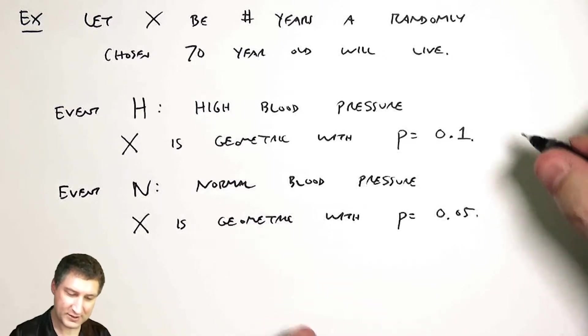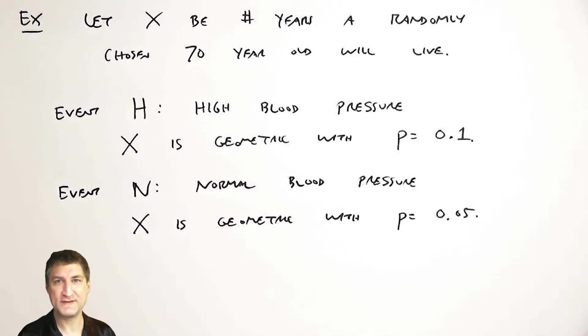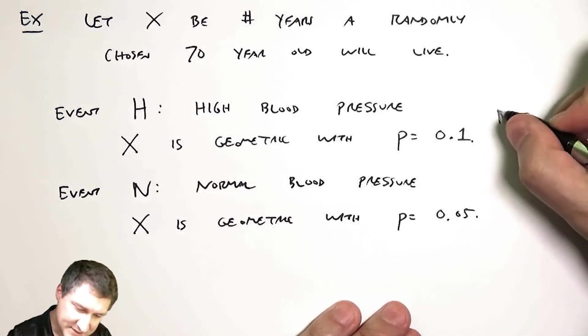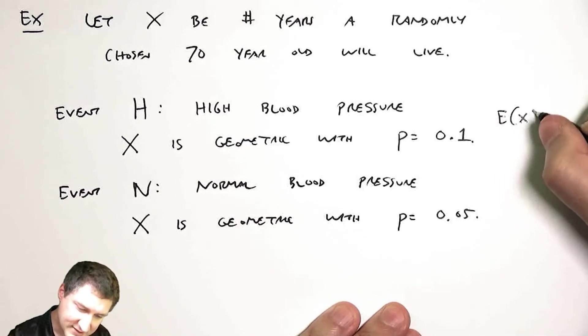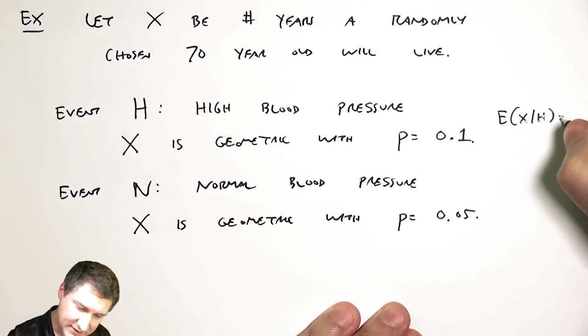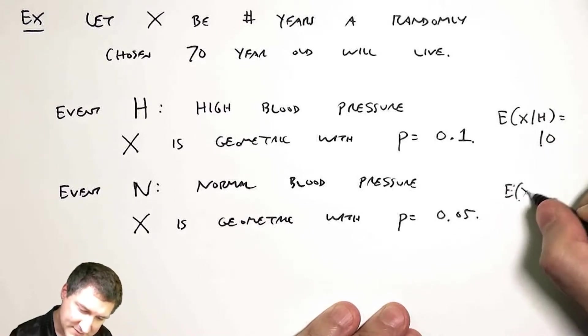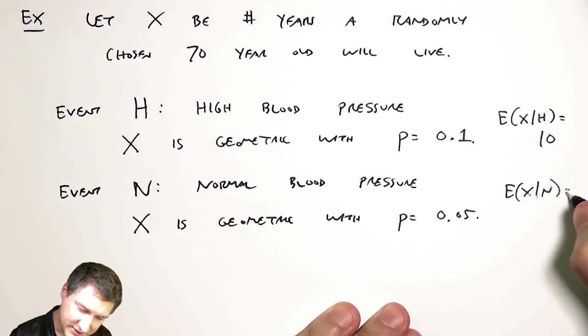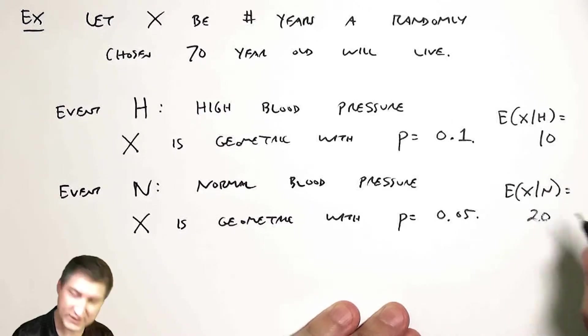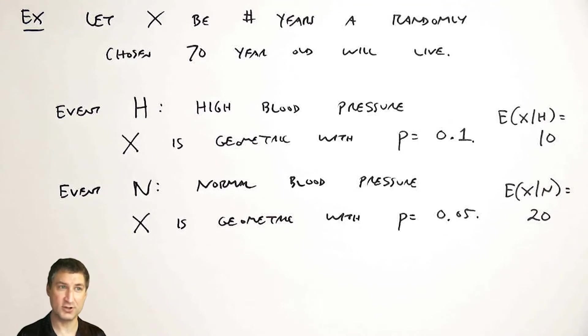Now here, remember that we know what the expected value of a geometric random variable is, it's 1 over P. So here, the expected value of X given high blood pressure is 1 over 0.1, which is 10. And here, the expected value of X given normal blood pressure is 1 over 0.05, which is 20. So if you have high blood pressure, you're going to live a little less long than someone with normal blood pressure.